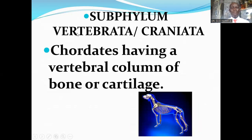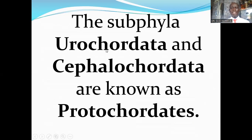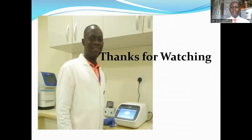The next subphylum is the subphylum Vertebrata or Craniata. The name is derived from the fact that they have a vertebral column. Chordates that have a vertebral column of bone or cartilage belong to the subphylum Vertebrata. Craniata means they have a skull that encloses and protects the brain. The subphyla Urochordata and Cephalochordata are known as protocordates — they are both classified into a subgroup known as Protocordata.